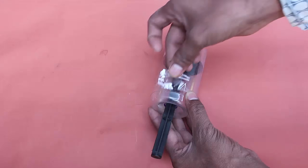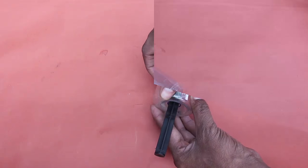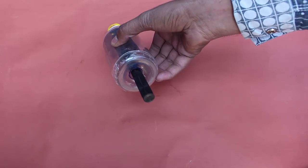Now place the piston plunger in the body of the bottle and tape the cut bottle base.